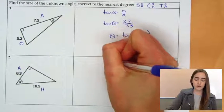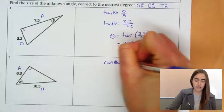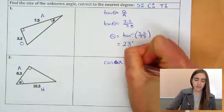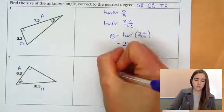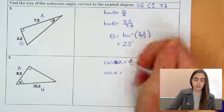So we'll write down cos alpha this time is equal to A over H. And we'll fill in what we know. So we've got cos alpha is equal to 6.3 over 10.5.